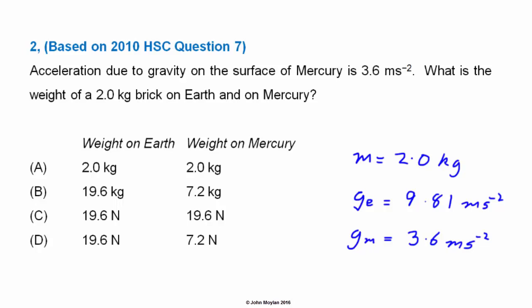Looking at the multiple choice answers: option A gives 2 kilograms for the weight on both Earth and Mercury — but we're after a force in Newtons, so we can discount A. Option B is also in kilograms, so we can discount B. Option C is in Newtons but both values are identical — since acceleration due to gravity on Earth and Mercury are very different, our formula F_g equals mg would give different answers, so we discount C. Therefore the answer has to be D.